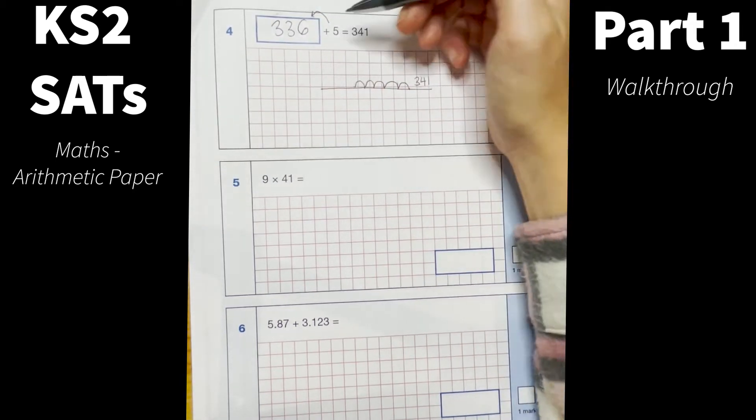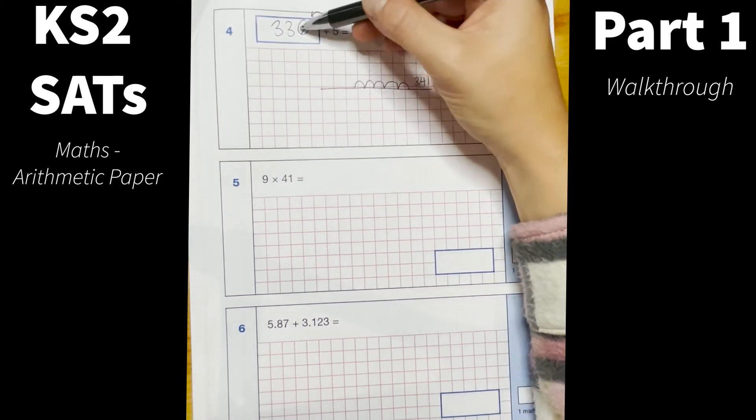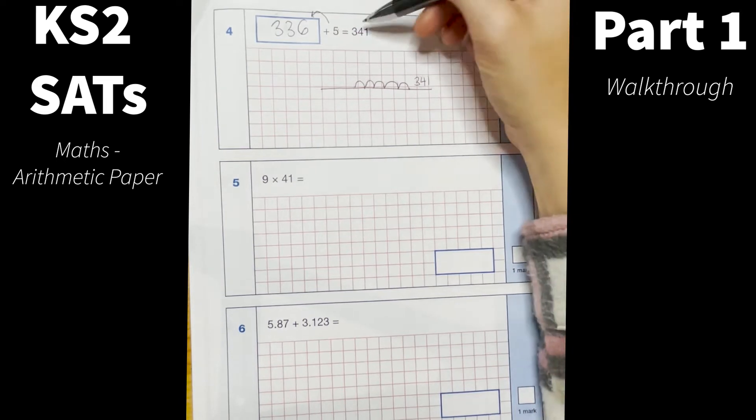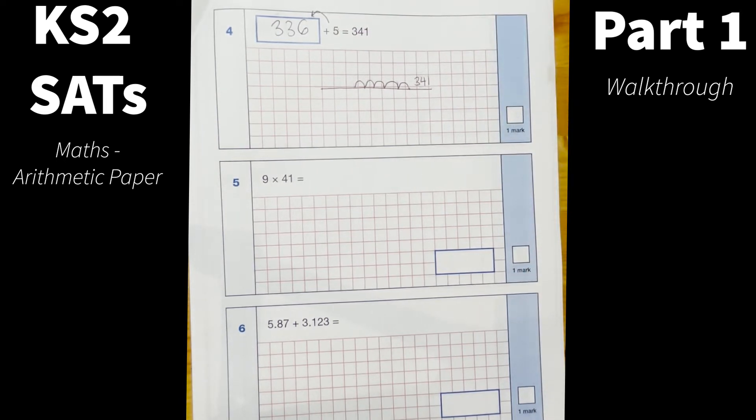They could always check their answer by adding, seeing what 335 add 5 would be and that should give them 341.